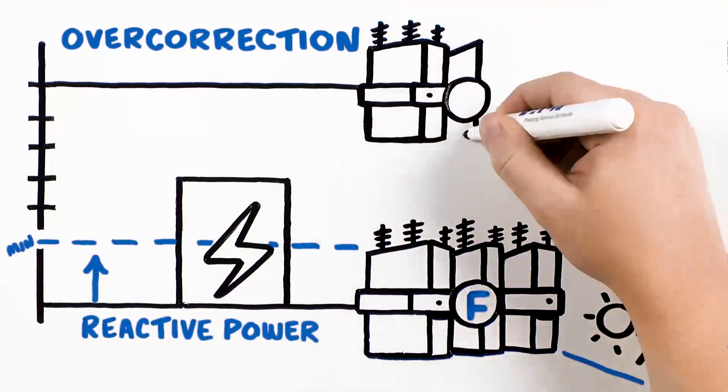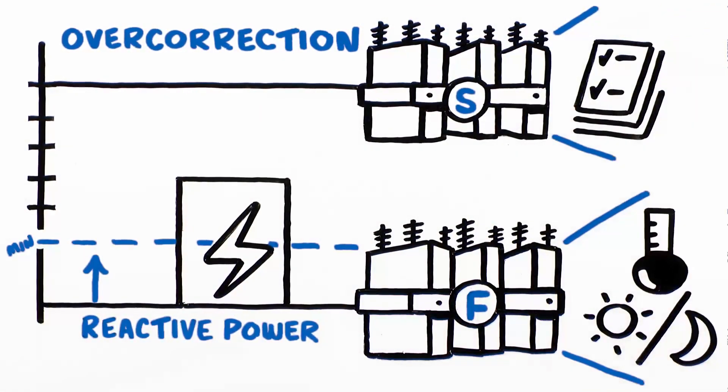Switched banks, which can be set to engage capacitors at set conditions, can prevent this overcorrection.